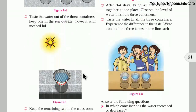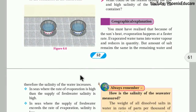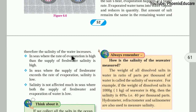Let us talk in detail. The seas where the rate of evaporation is high — the rate of evaporation depends on the temperature. In the equatorial region or torrid zone where the temperature is more, the rate of evaporation is also high. Then if many rivers meet the sea and supply fresh water to it, the salinity will be in control.